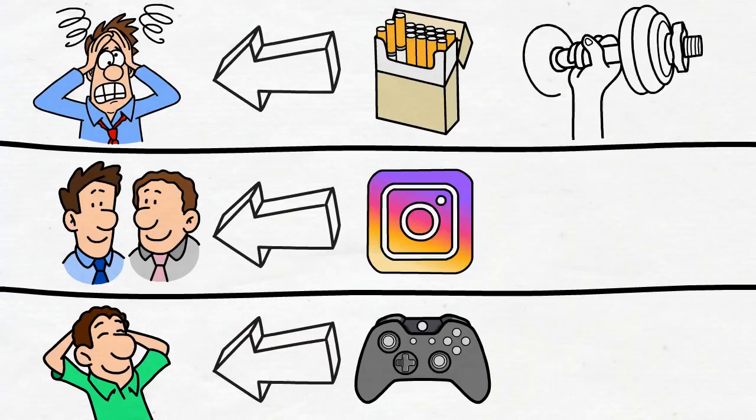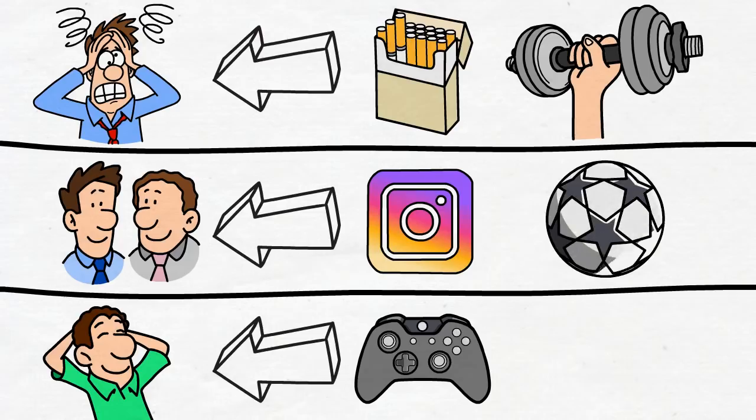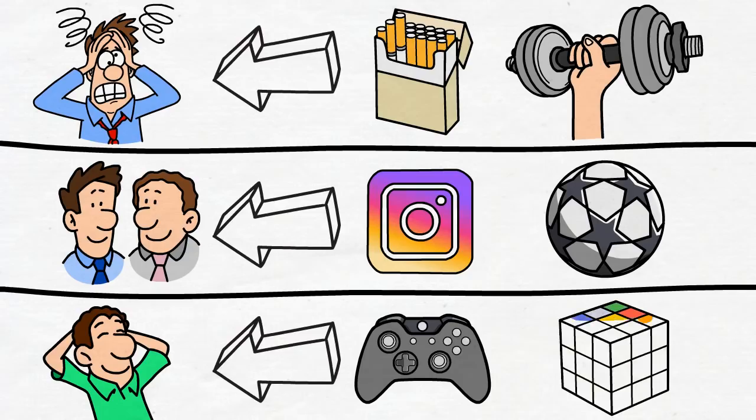One person might learn to reduce stress by smoking. Another person learns to decrease it by going for a run or lifting weights at the gym. Same craving, but a different and a much better solution. And this is one of the best ways to break your bad habits. Replacing them with better alternatives.